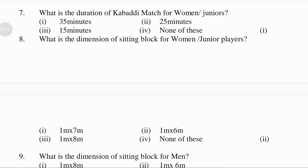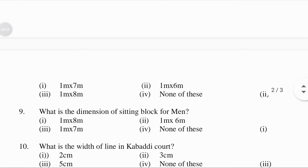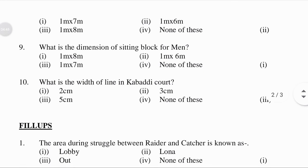What is the dimension of the sitting block for women or junior players? First option 1 meter x 7 meter, second option 1 meter x 6 meter, third option 1 meter x 8 meter, fourth option none of these. The answer is the second option: 1 meter x 6 meter. What is the dimension of the sitting block for men? First option 1 meter x 7 meter, second option 1 meter x 8 meter. The answer is the first option: 1 meter x 8 meter.